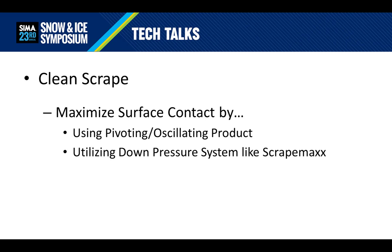The second element to a clean scrape is maximizing surface contact. This can be achieved by using pivoting or oscillating products. The Western brand is known for its pivot bar system that allows the plow to roll with uneven surfaces, ensuring that the cutting edge is in contact with the ground longer, ensuring snow is removed more thoroughly, and less salt can be used. Utilizing down pressure systems like ScrapeMax also help ensure that as the surface changes, the plow remains in contact.